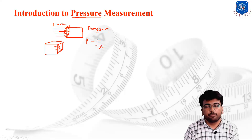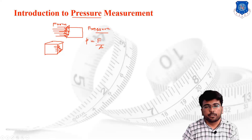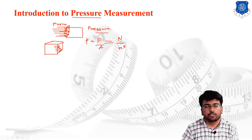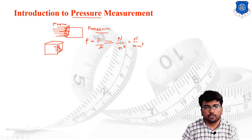Pressure is distributed over an area, whereas force is a point quantity — that is the basic difference between force and pressure. The unit of force is Newton and area is meter squared, so the unit of pressure is Newton per meter square, or Newton per millimeter square. These are the basic units for pressure measurement.